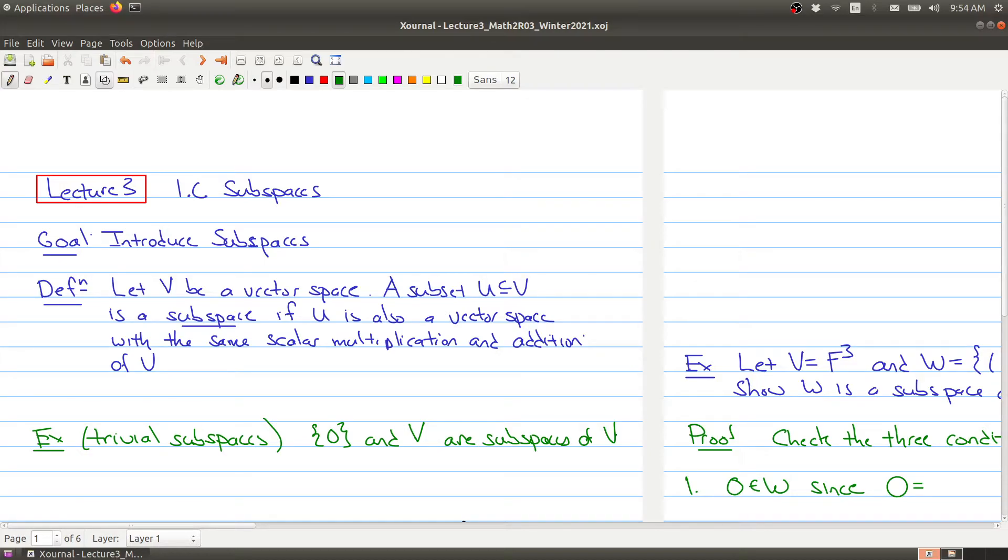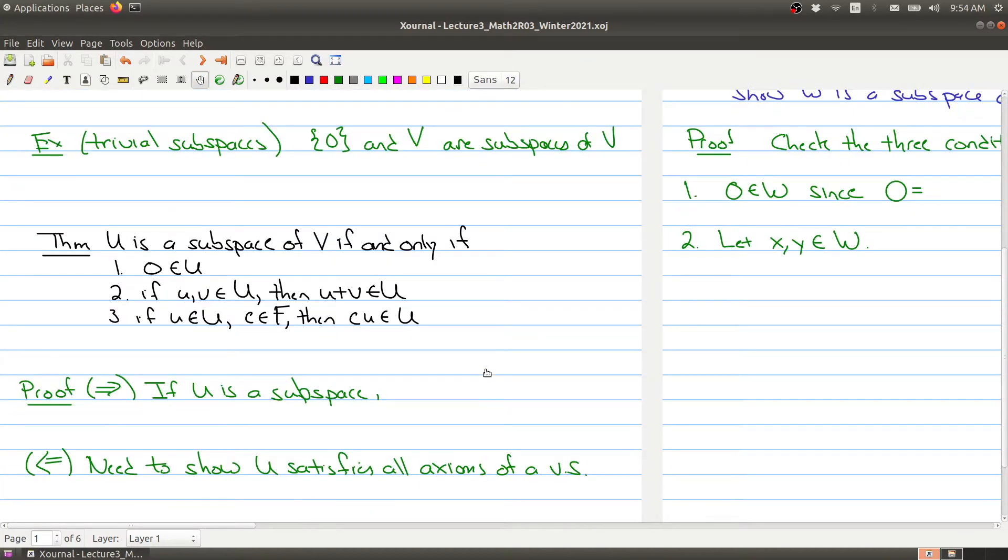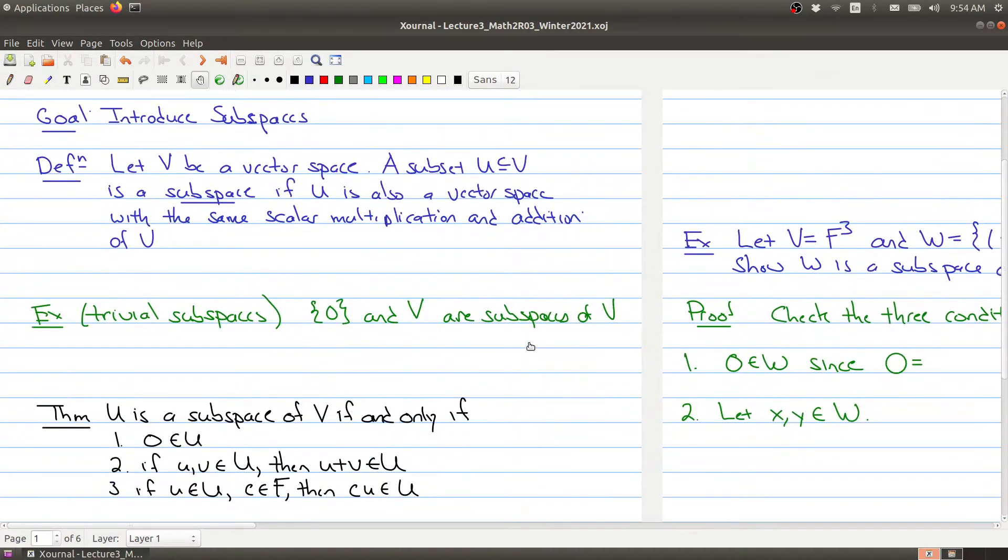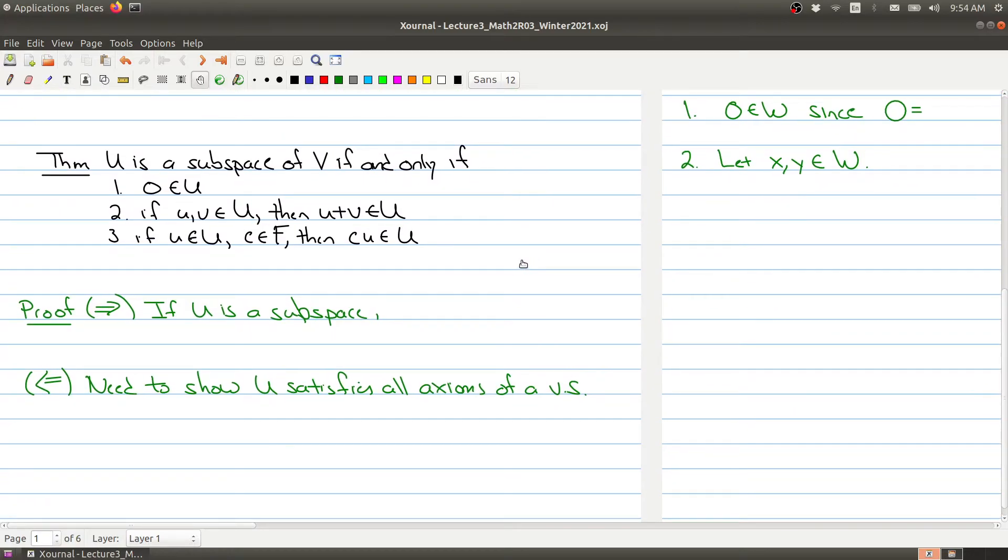So these are called the trivial subspaces because every vector space has these subspaces. Here I think it's probably the most important result that you're going to see in today's lecture, a theorem which allows you to characterize when you determine whether a subset is a subspace or not. If we go up to the definition, it would look like you would have to check all seven of those criterion that we talked about in the last lecture. But what the following theorem is saying is no, you don't have to check all the criteria and you only have to check these three criteria and they're very simple to check.